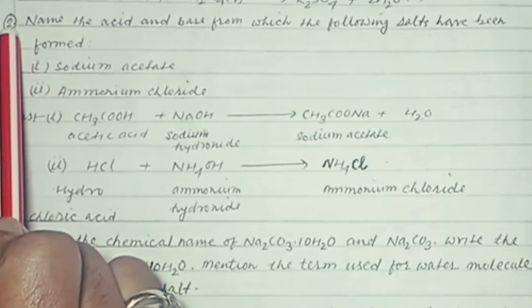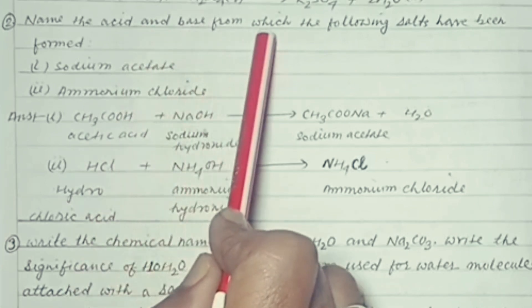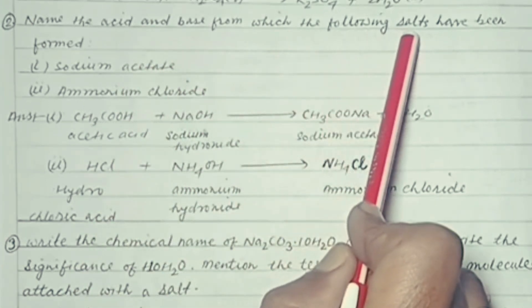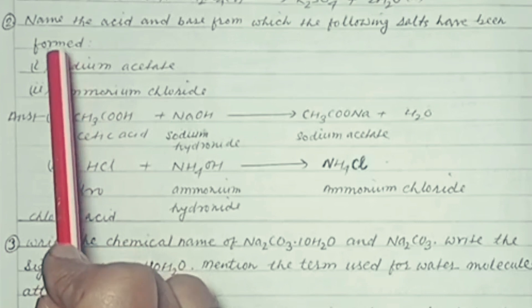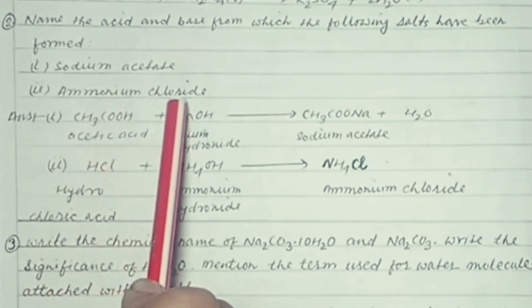Question number 2. Name the acid and base from which the following salts have been formed. 1. Sodium acetate. 2. Ammonium chloride.